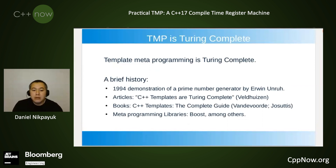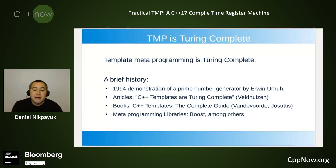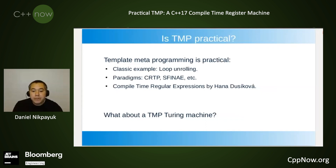The big claim that I think a lot of people know is that template metaprogramming is Turing complete. A brief history of that: in 1994 there was the classic demonstration of a prime number generator. Following that were articles proving Turing completeness, then books, and then metaprogramming libraries — Boost, for example.